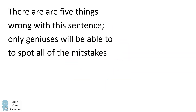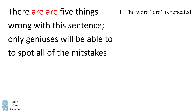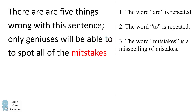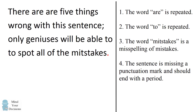So the first 4 mistakes in this sentence are fairly easy to figure out. The first is that the word R is repeated. The second is that the word TO is repeated. The third is that the word MISTAKES is a misspelling of the word MISTAKES. And the fourth is that the sentence is missing a punctuation mark and should end with a period.